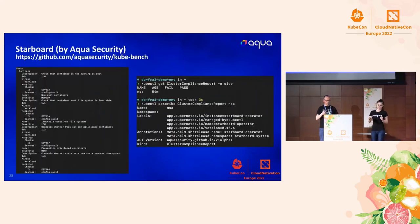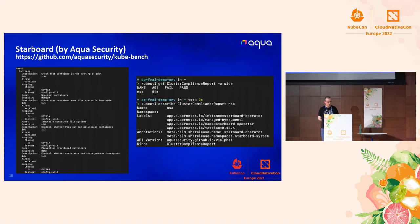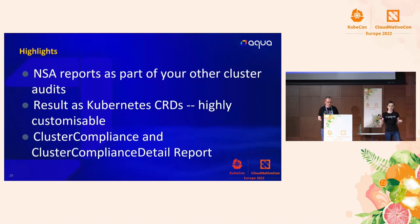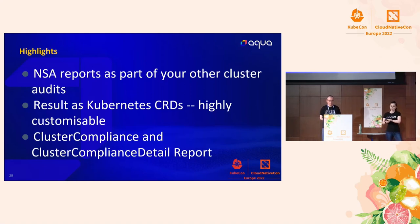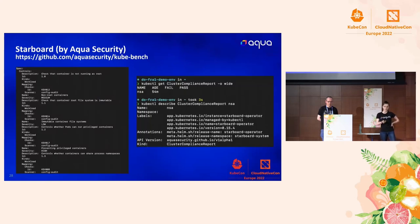Moving on to NSA reports — Starboard also now has an NSA add-on which creates cluster compliance reports inside your cluster. Through the Starboard operator, you can generate NSA reports, which are custom resource definitions living inside your Kubernetes cluster once generated — you can query them like other Kubernetes resources. The NSA reports are part of your other cluster audit reports with Starboard. Because it's a Kubernetes resource, it allows you to integrate the reports with your existing tools, rather than maintaining a separate tool. It also creates both cluster compliance and cluster compliance detail reports.